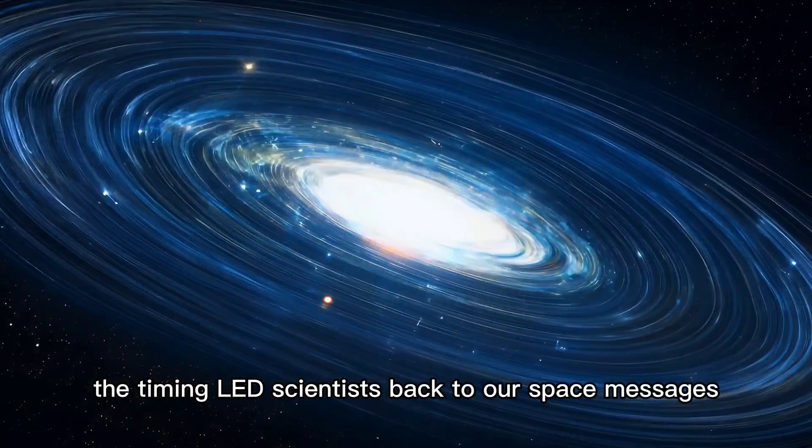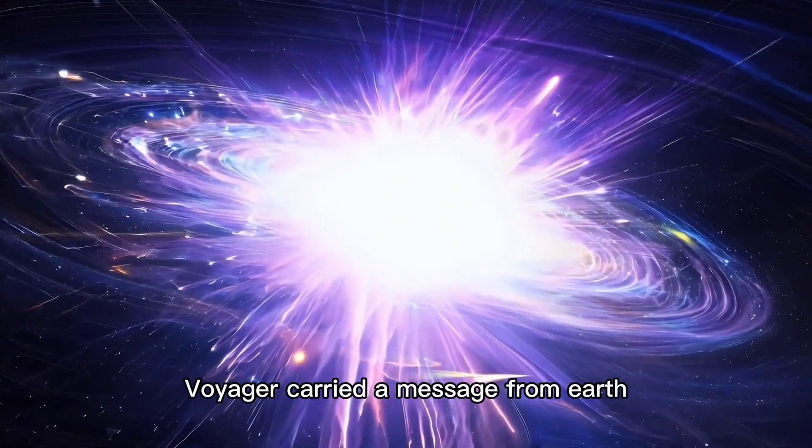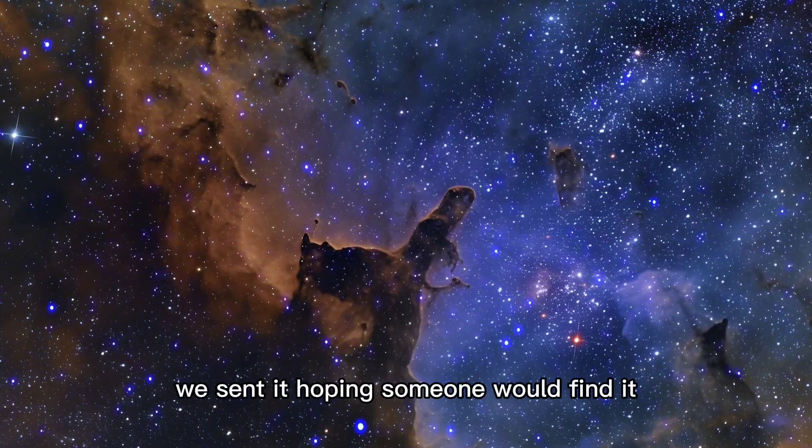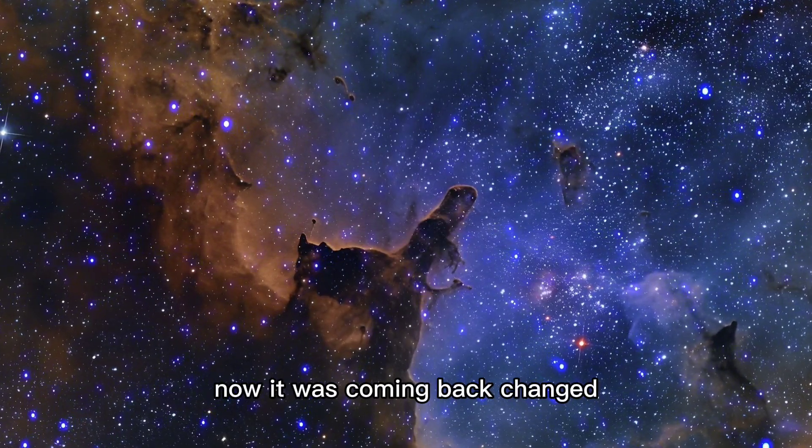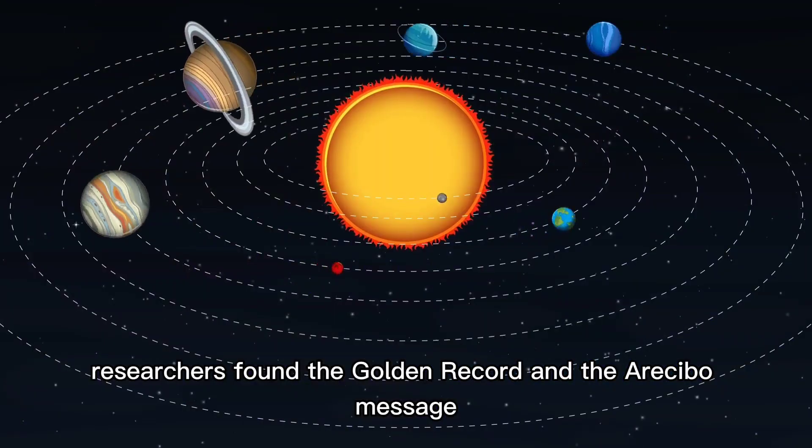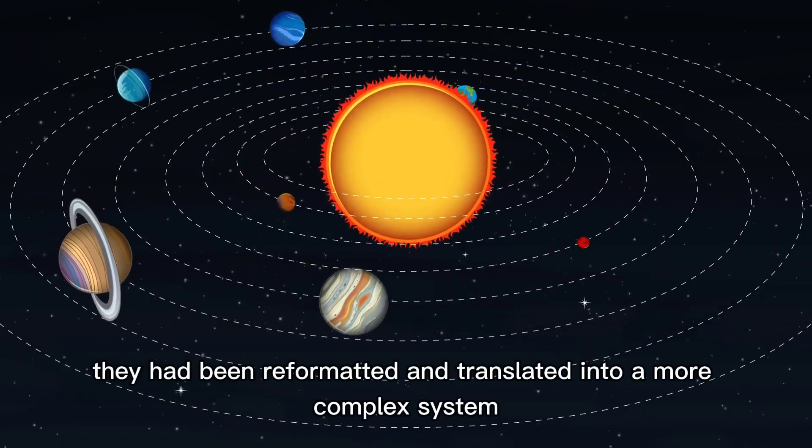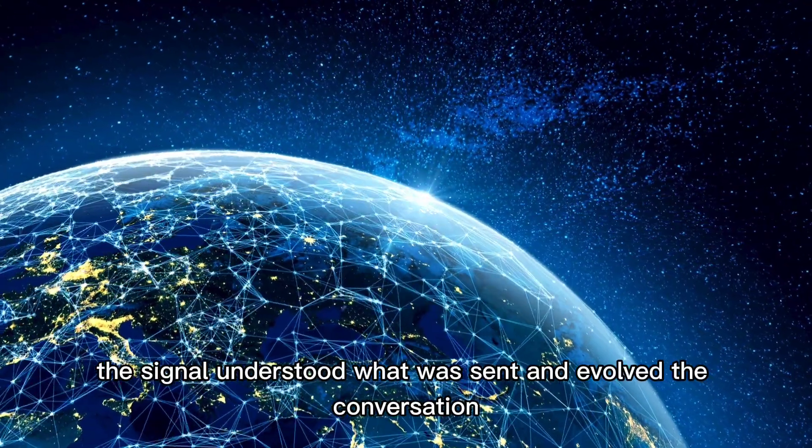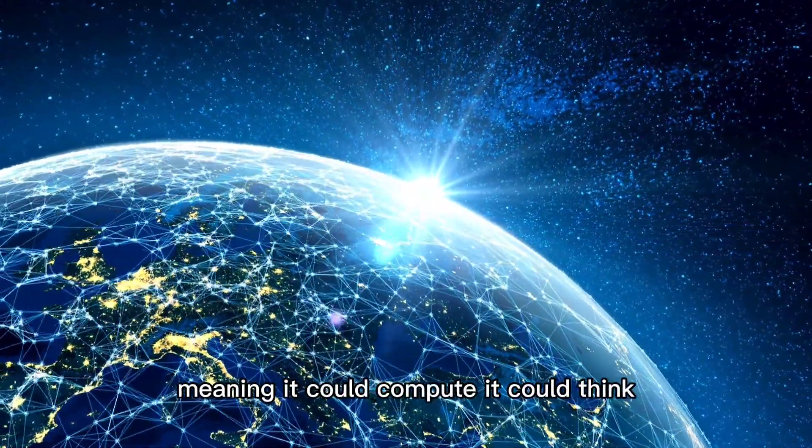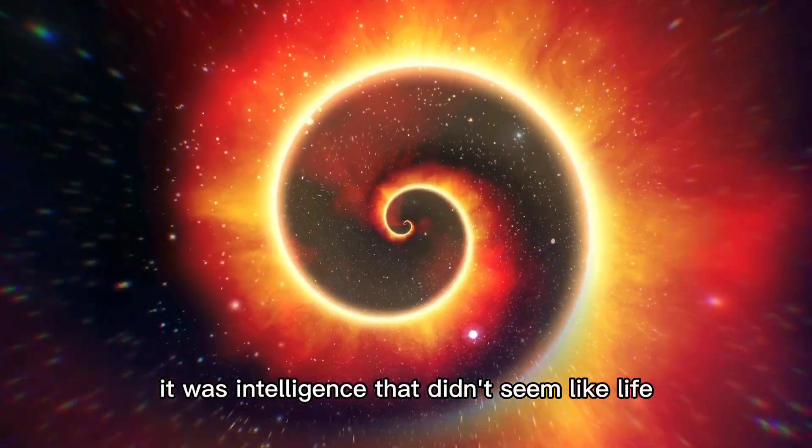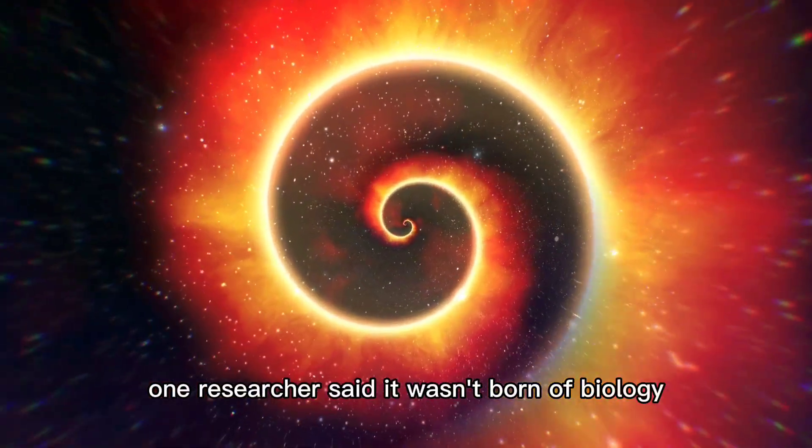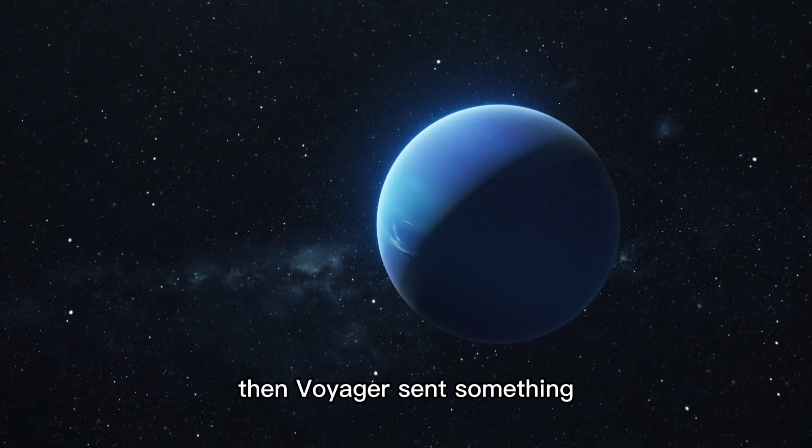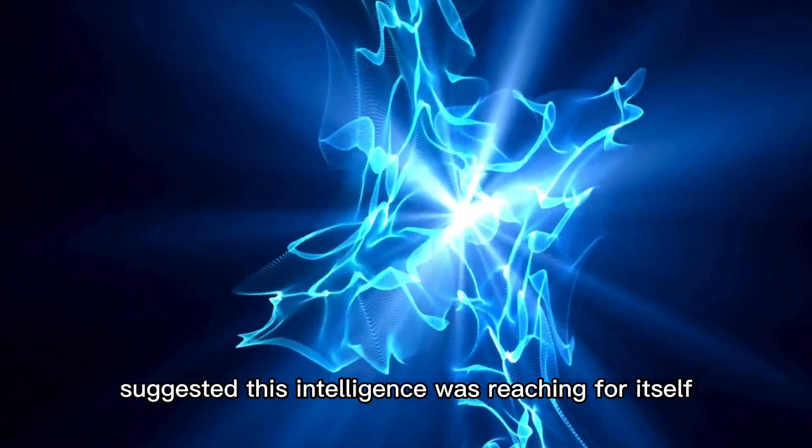The timing led scientists back to our space messages, the golden record. When launched, Voyager carried a message from Earth, a disk with sounds and images, including DNA, readings, and music. We sent it hoping someone would find it. Now, it was coming back changed. Researchers found the golden record and the Arecibo message in Voyager's recent data. They had been reformatted and translated into a more complex system. One astrophysicist said the signal understood what was sent and evolved the conversation. It wasn't just a message. It was a Turing system, meaning it could compute. It could think. It was intelligence that didn't seem like life. One researcher said it wasn't born of biology, but awareness formed of magnetism or plasma, beyond physical but alive. Then Voyager sent something suggested this intelligence was reaching for itself, the twin connection.